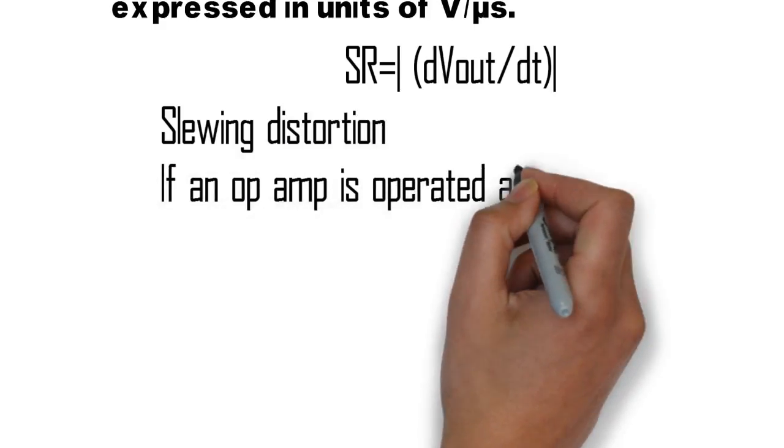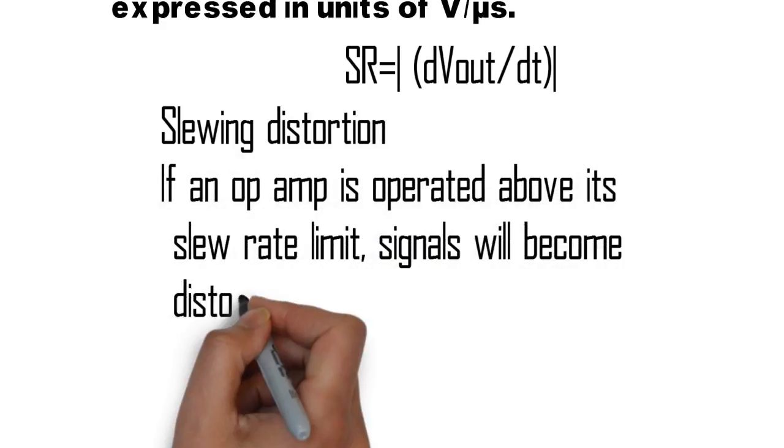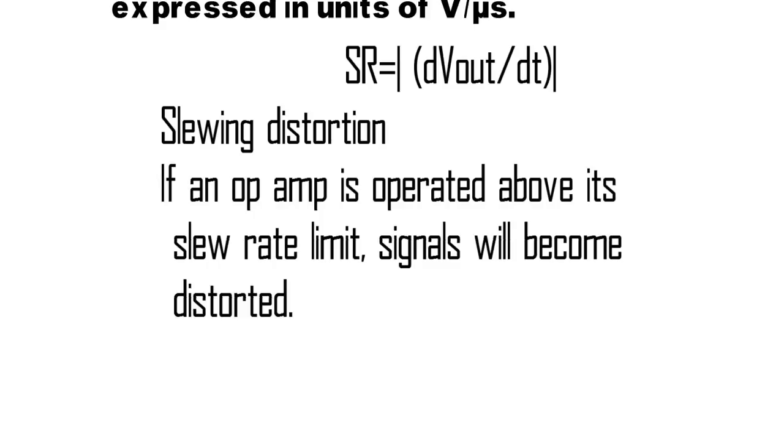Slewing distortion: If an op-amp is operated above its slew rate limit, the signal will become distorted.